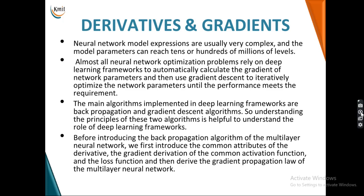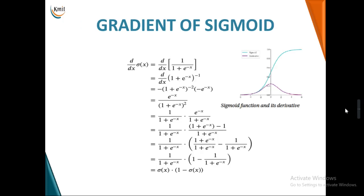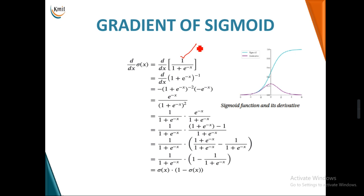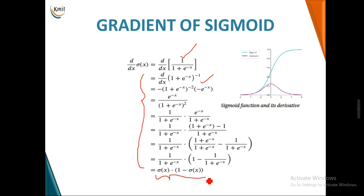The first activation function we have already studied is the sigmoid function, mathematically written as 1 / (1 + e^(−x)). Using the simple formula for differentiation and rearranging it properly to express it back in the form of a sigmoid function, the gradient of the sigmoid function is: sigmoid(x) × (1 − sigmoid(x)).